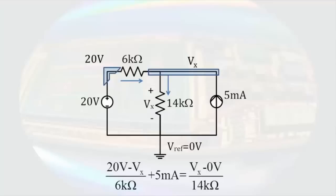Solving this node equation results in a value of Vx that is 35 volts. So now let's analyze this circuit looking at the contributions of each source individually to Vx.